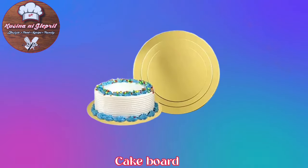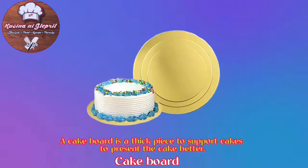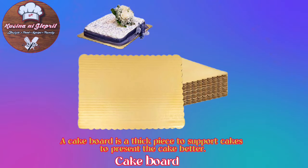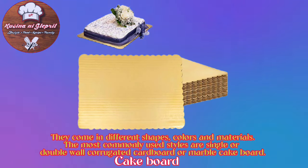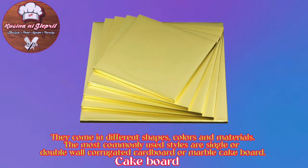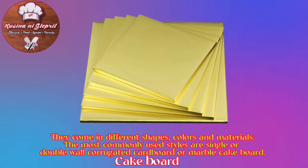Cake Board: A cake board is a thick piece used to support and present cakes better. They come in different shapes, colors, and materials. The most commonly used styles are single or double wall corrugated cardboard, or marble cake board.